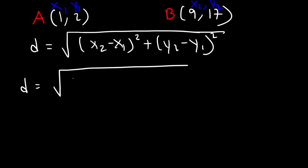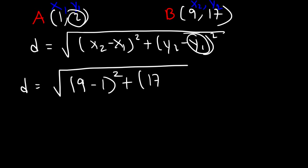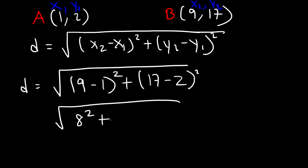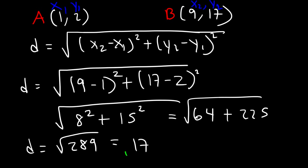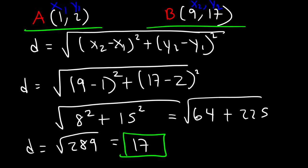So x2 is 9, x1 is 1, y2 is 17, and y1 is 2. So 9 minus 1 is 8, and 17 minus 2 is 15. Now 8 squared is 64, and 15 squared is 225. Adding 64 and 225 gives 289, and the square root of 289 is 17. So the distance between these two points is 17 units.